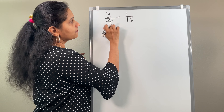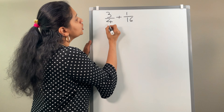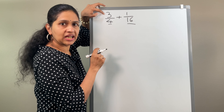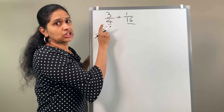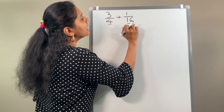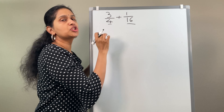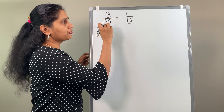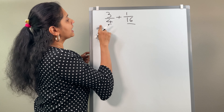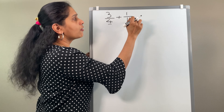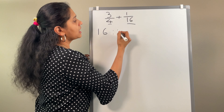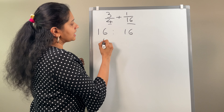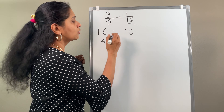Consider this example: 3 by 4 plus 1 by 16. Now let us solve this fraction using the least common multiple method, the LCM method. To do this, our first aim is to make the denominators the same. The upper part is the numerator and the lower part is the denominator. So step 1 is we have to find the LCM of 4 and 16.